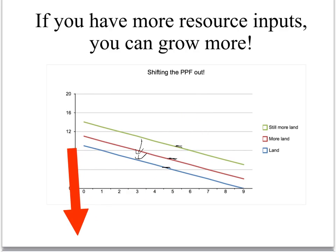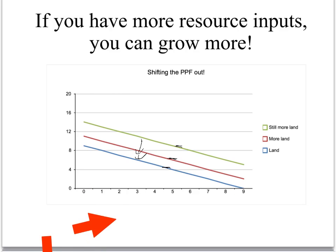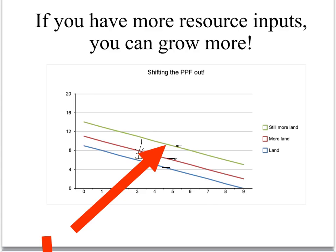The more you have, the more roses and poppies you can grow. Note the way I drew this — these are parallel lines, just more land for both of them. The price doesn't change, because the price of roses is the poppies and the price of poppies is the roses. The trade-off remains the same, the way I drew this.